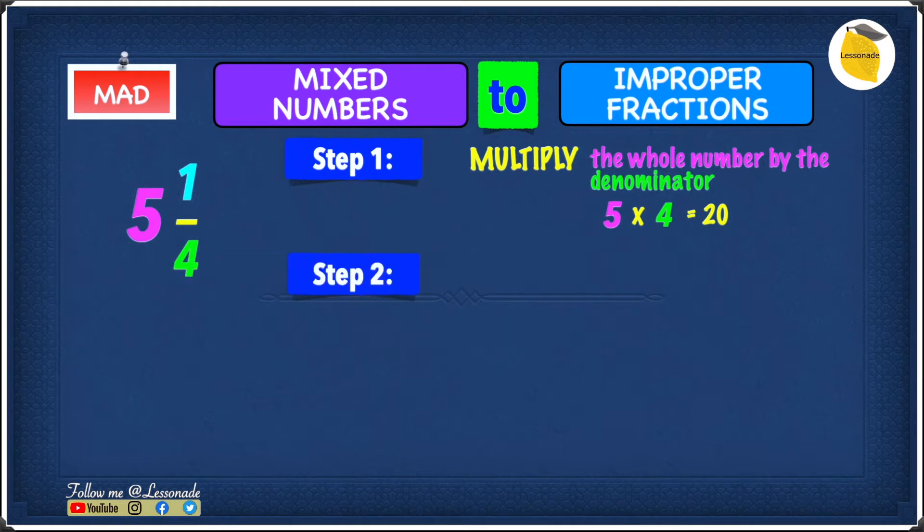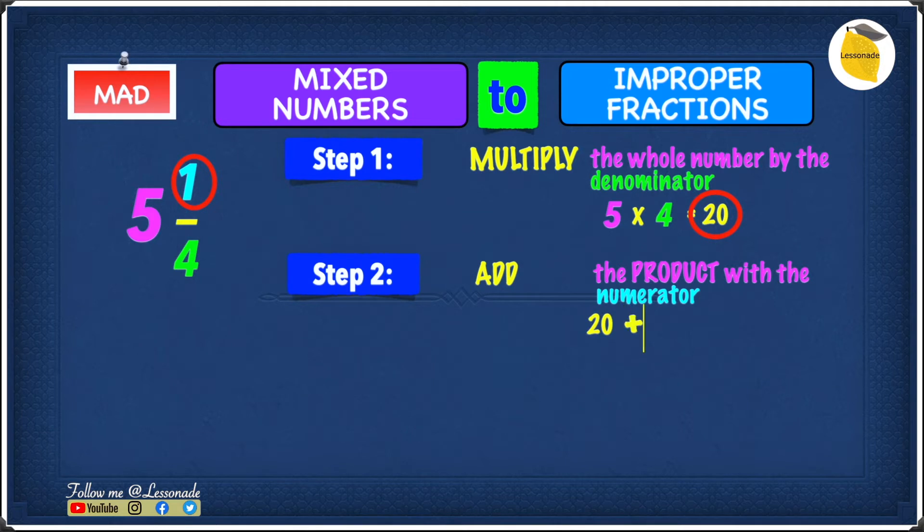Next step, step 2, is going to add. So you're going to add the product, which is 20, with the numerator, which is 1. So all you're going to do is going to be 20 plus the numerator, which is 1. 20 plus 1 gives you 21.